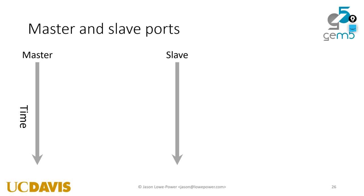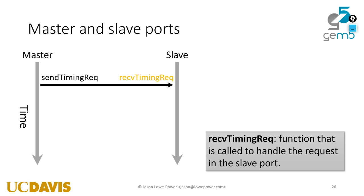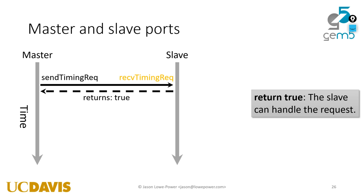Let's talk about how this master-slave port interaction works. Masters will send a request to a slave, which sends a packet. The master will call send timing request, and this timing request will go to the slave. On the slave side, the function that gets executed is called receive timing request. A slave needs to implement receive timing request. Then you return true if you can handle that request at the time - for instance, if you're modeling memory, you return true if you are not currently busy handling something else.